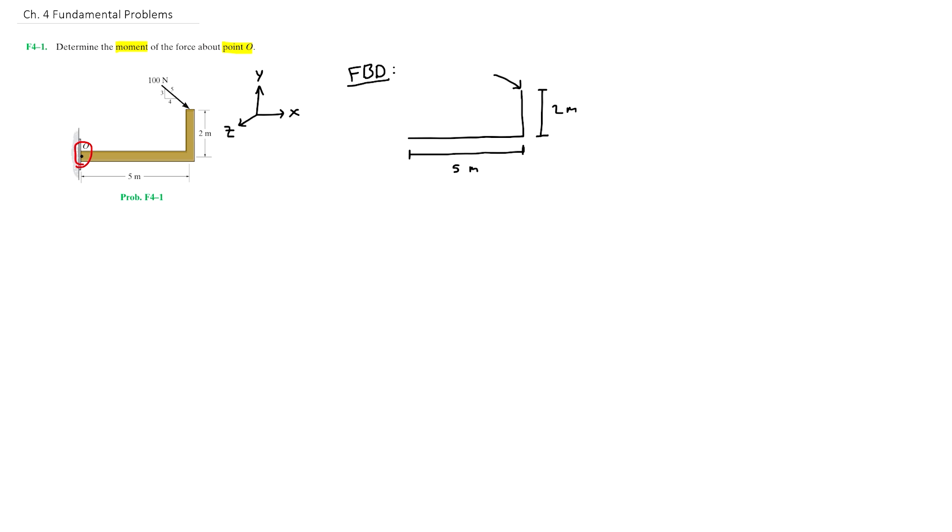On the top right we have the 100 newton force at an angle which is described by a 3-4-5 slope triangle just like so. On the far left we have our point O, and we have our basic x-y-z coordinate plane. Now the last thing we need to do in this free body diagram is to break down the 100 newton force into its x and y components.